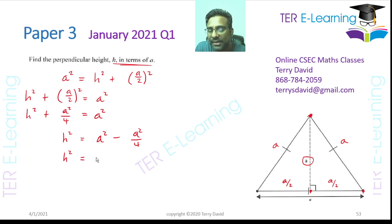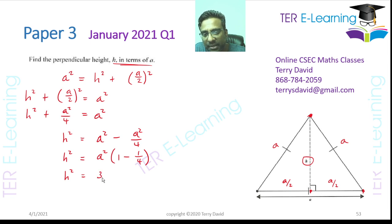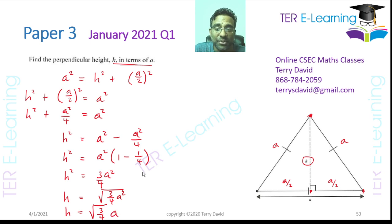Some of you may need to factorize: e² − e²/4 = e²(1 − 1/4) = (3/4)e². Therefore h = √(3/4) · e. That is the perpendicular height in terms of e.